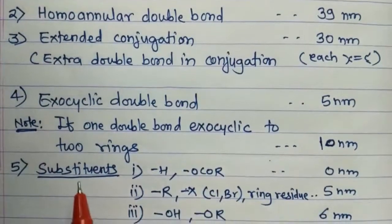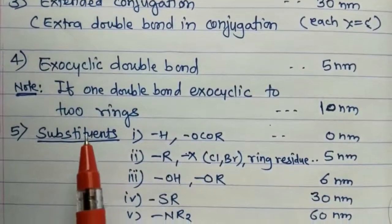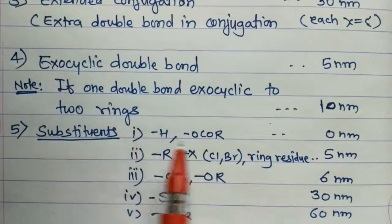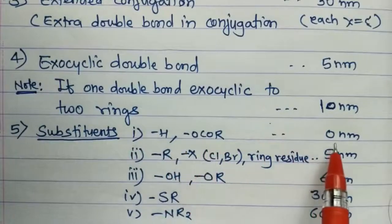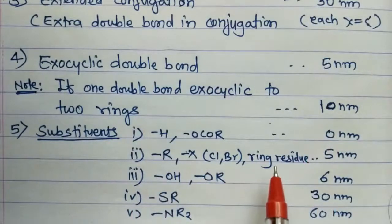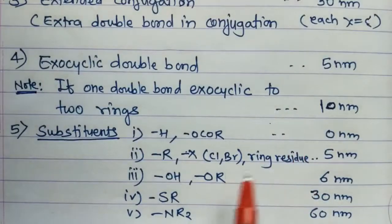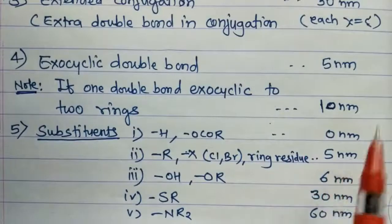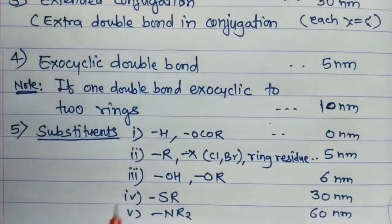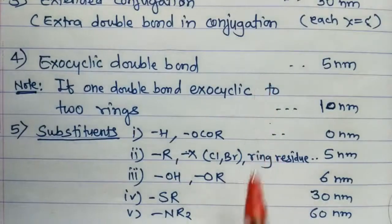Fifth point — substituents, which is where most mistakes occur. Hydrogen or acetate: add 0 nm. Alkyl group, halogens (Cl, Br), or ring residue: add 5 nm each. Hydroxyl or alkoxy group (OR): add 6 nm. SR group: add 30 nm. NR₂ group: add 60 nm to the basic lambda max value.